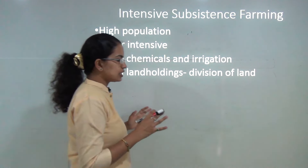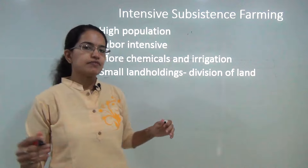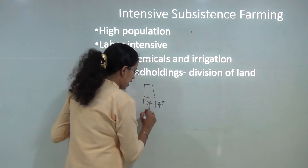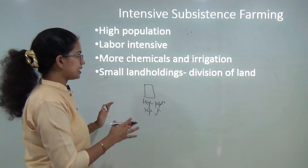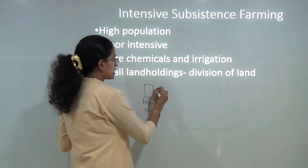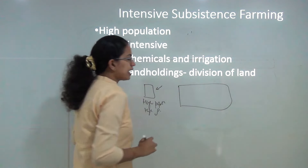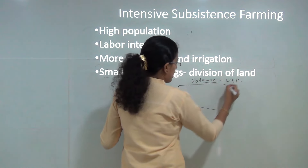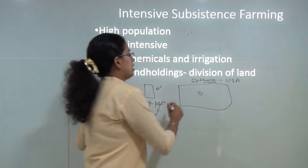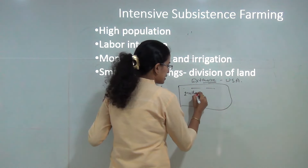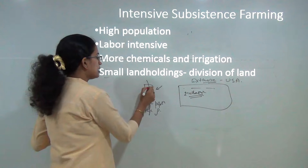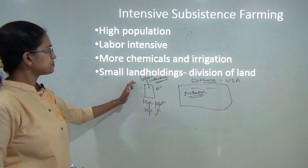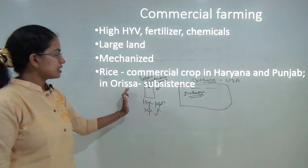Intensive subsistence farming means a small plot of land with high population density, small land holdings, and more chemicals and irrigation practices used. Under extensive agriculture you have a huge patch of land — commonly seen in the United States — where all agriculture is mechanized using tractors and big machinery. In intensive farming it is mainly labor-intensive because the small patch of land cannot accommodate mechanized inputs.